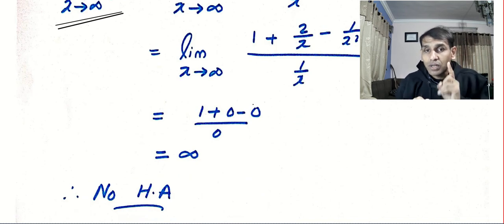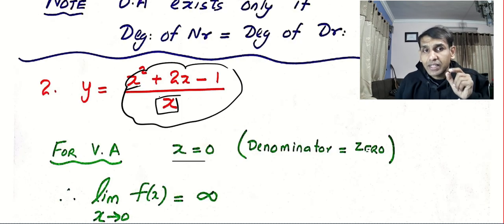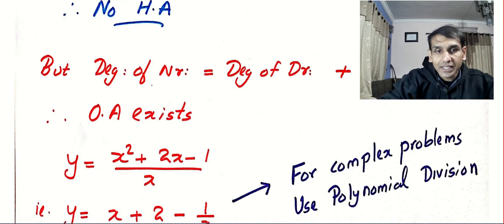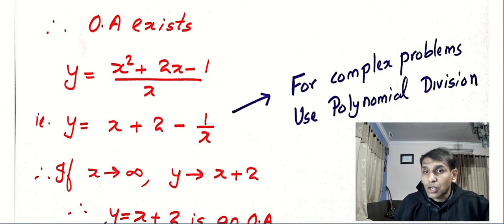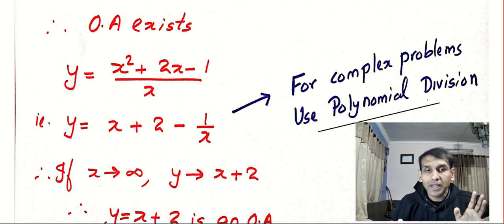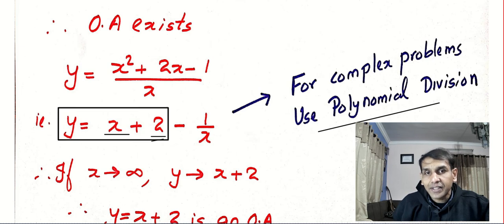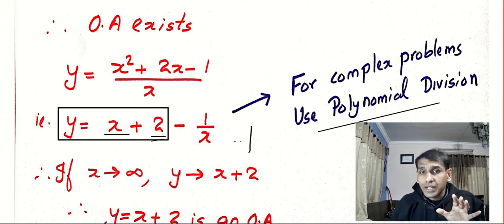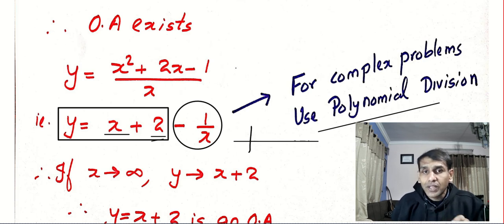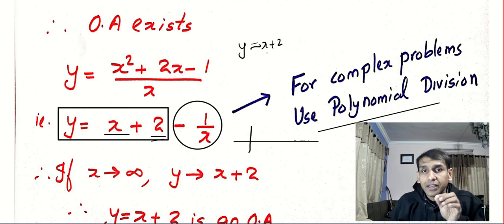Now let me tell you one more thing: slant asymptotes. Slant asymptotes occur when the degree of the numerator is one more than the degree of the denominator. I kept a simple problem so you can understand — I am using the division method here, but for complex problems use the long division method. Dividing: x² divided by x, 2x divided by x, −1 divided by x. This part looks like a linear expression. When far from the origin, the term −1/x will disappear as x tends to infinity, and our curve will be approximately the line y = x + 2. So our curve comes nearer and nearer to the line x + 2 — that gives you an oblique asymptote.